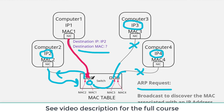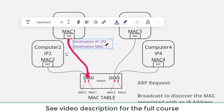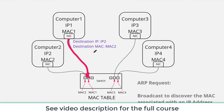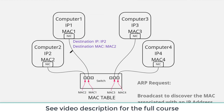The ARP response is received by computer one, which can now update its internal ARP table. The ARP table is basically a table of associations — if I need to go to IP address two, I send the Ethernet frame to MAC address two. It tracks which IPs are associated with which MAC addresses. Now that it's discovered the destination MAC, it can send out a layer two unicast destined for MAC two. The switch looks at its MAC table, finds the right port, and the two devices can communicate.